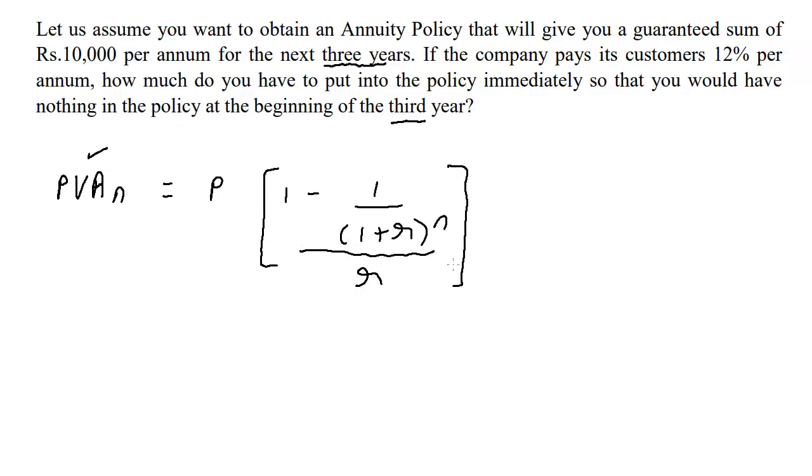And this would be the formula we would use if we were not getting 10,000 in year 0 as well. Because we're getting 10,000 in year 0, we are interested in calculating the present value for 10,000 that's going to be received for 2 years. The present value of the first cash flow, the one which you're going to get in year 0. In year 0, the present value of rupees 10,000 is going to be rupees 10,000.